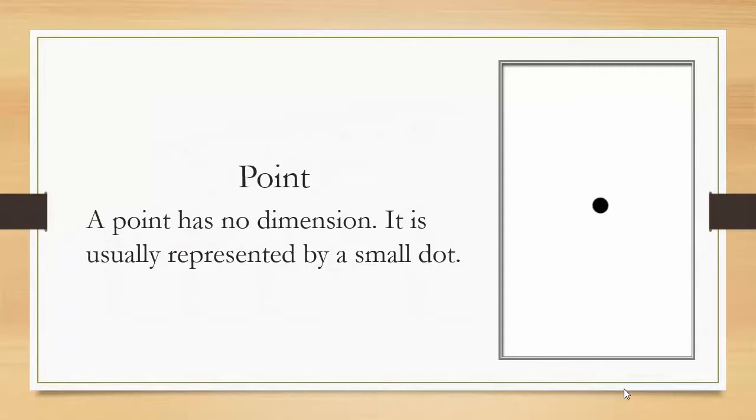We start our vocabulary words with point. A point has no dimension. It is usually represented by a small dot. The notation used to represent a point is usually a capital letter. Most often it is the letter P.